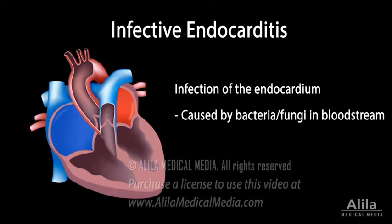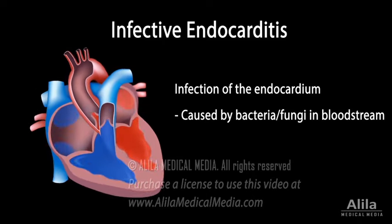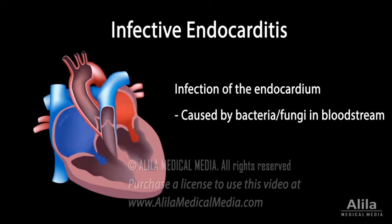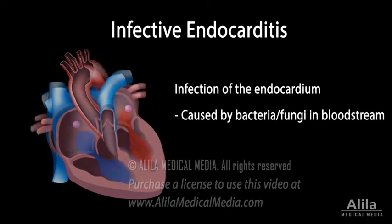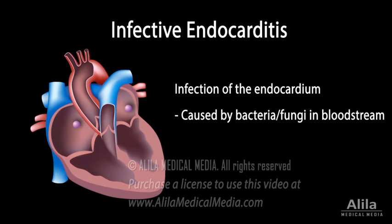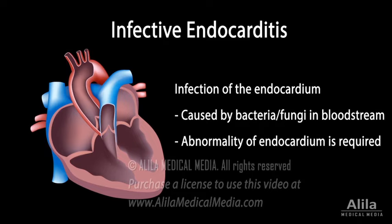Constant flow of blood also helps prevent bacterial attachment, and the bacteria are usually destroyed by the immune system before they can cause infection. An abnormality of the endocardium is typically required for endocarditis to occur.